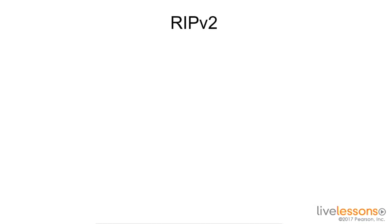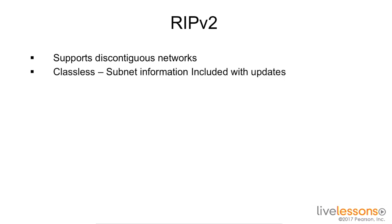RIPv2 is a big improvement over RIPv1. First of all, it supports discontiguous networks. Secondly, it supports a classless IP address scheme because now it sends subnet information included with its updates. Its updates have also changed in the fact that they are not broadcast based anymore — they are multicast based, which is much more efficient.